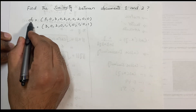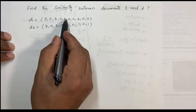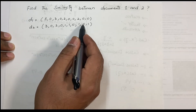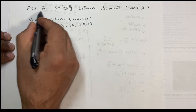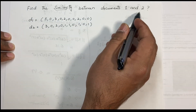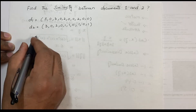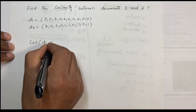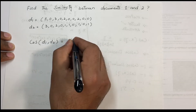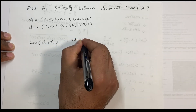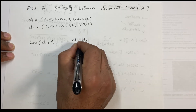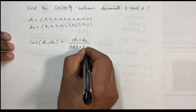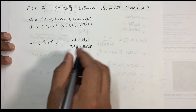Let's see another example. We have two documents: d1 = [5, 0, 3, 0, 2, 0, 0, 0, 2, 0, 0, 0] and d2 = [3, 0, 2, 0, 1, 1, 0, 1, 0, 1]. We have to find the similarity between document one and document two using the formula: cos(d1, d2) = d1·d2 divided by ||d1|| × ||d2||.